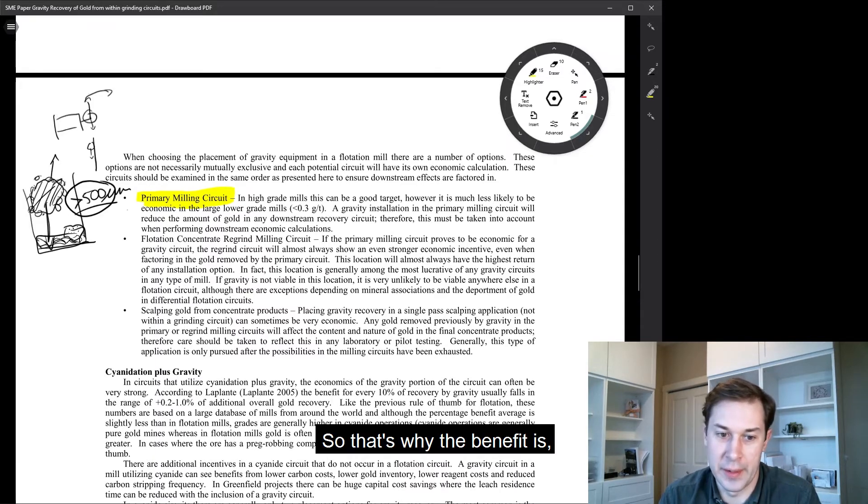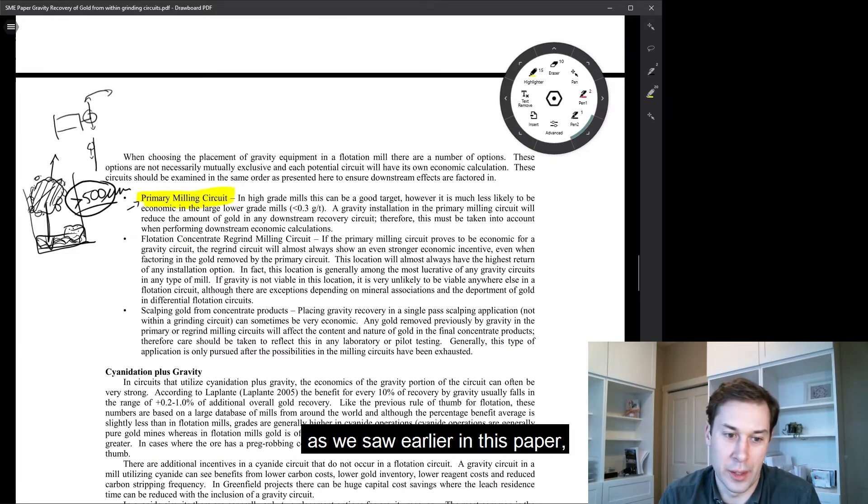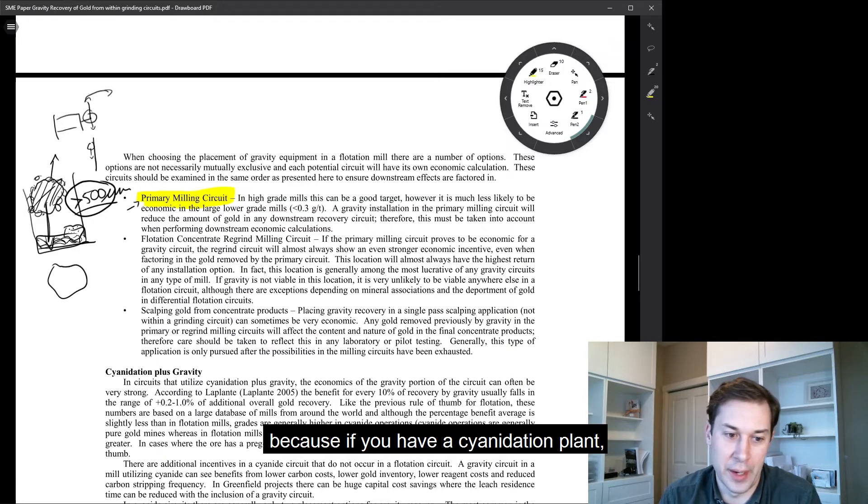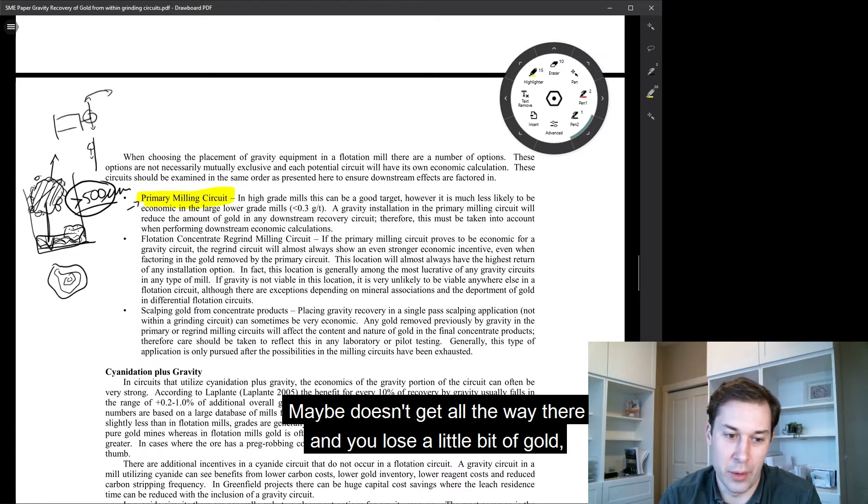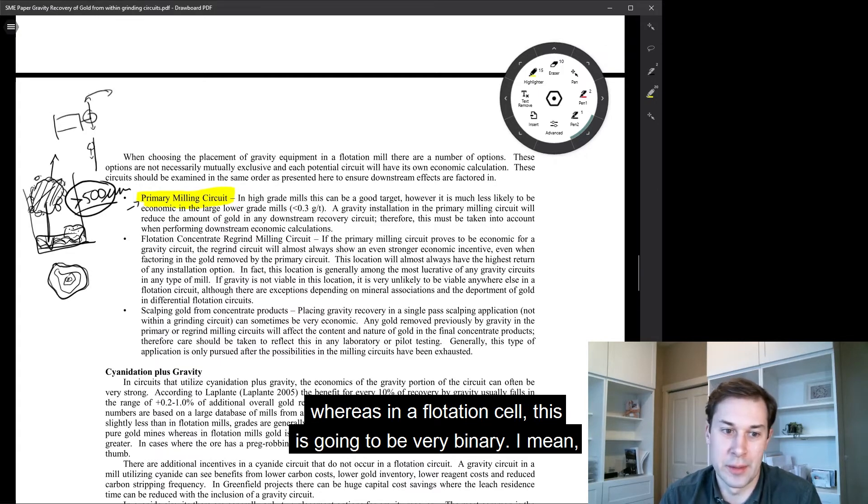So that's why the benefit is, there's a strong benefit in the primary milling circuit and more so, as we saw earlier in this paper, more of a benefit than in a cyanidation plant because if you have a cyanidation plant, the cyanide is going to progressively dissolve these larger particles. Maybe it doesn't get all the way there and you lose a little bit of gold. But that's a result to a degree of recovery.